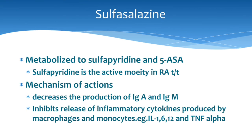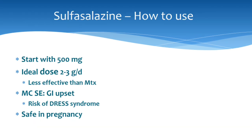Sulfasalazine is another useful drug, metabolized to sulfapyridine and 5-aminosalicylic acid; sulfapyridine is the active moiety in rheumatoid arthritis. It decreases production of IgA and IgM, and inhibits release of inflammatory cytokines from macrophages and monocytes — such as IL-1, IL-6, IL-12, and TNF-alpha. Start with 500 mg twice daily, then 500 mg thrice daily, and then the full dose of 1 gram twice daily. It is less effective than methotrexate; GI upset and risk of DRESS syndrome can occur, but it is safe in pregnancy.